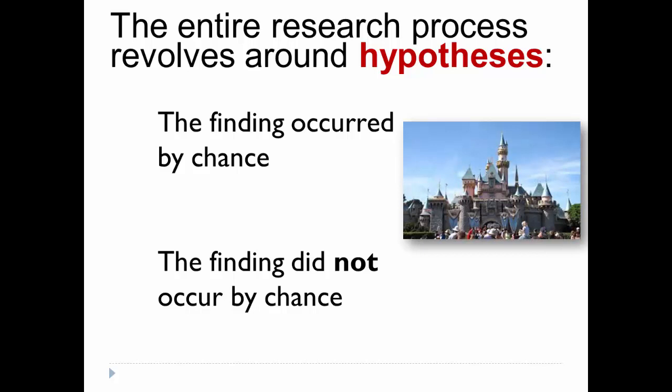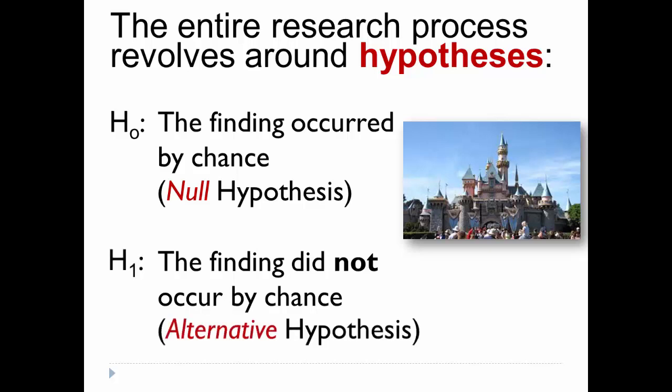It could be that the day we went was, just by chance, not as busy as others. But Disney had just changed their pricing structure. It's very possible that what I observed was not an anomaly, and that the reduction in crowds was due to that stimulus — in other words, not due to chance. The null hypothesis would be that the finding of Disneyland being less crowded was just due to chance. The alternative hypothesis would be that something happened — in this case, Disney's change in pricing — that is correlated with the reduced crowds.